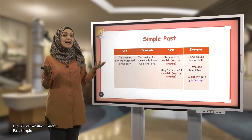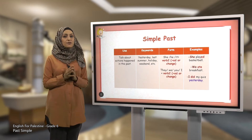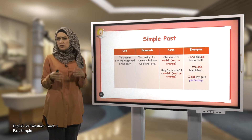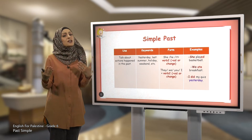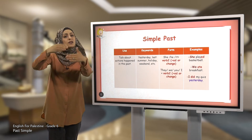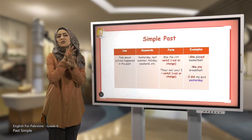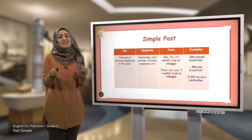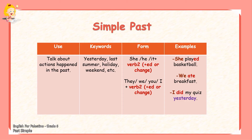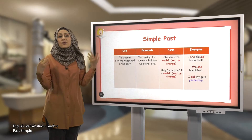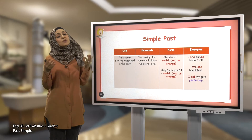When we have an irregular verb — irregular verbs are verbs that don't follow the rule. They don't take E-D; they change themselves. For example, 'do' becomes 'did.' I did my quiz yesterday. 'Write' becomes 'wrote.'